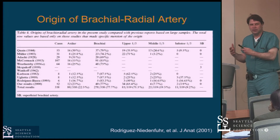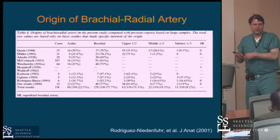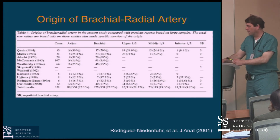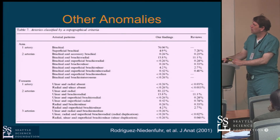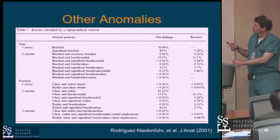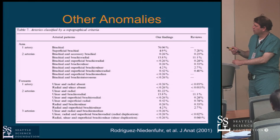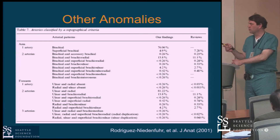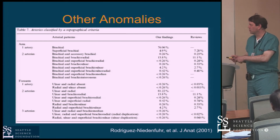The point of being aware of these variants is that when you encounter resistance, you understand what you're looking at. Other anomalies: most of the time there's one brachial artery, but about 10% of the time patients have an accessory brachial artery. In the forearm, there are different variations including duplications and even three arteries present. These have been described in various anatomic series and are more of academic interest than anything else.